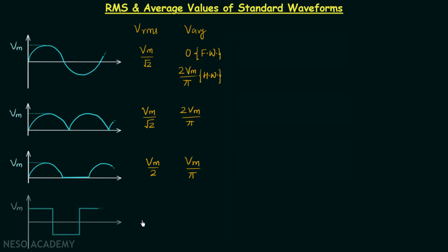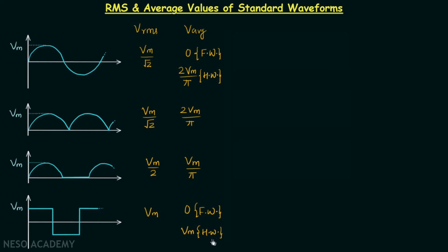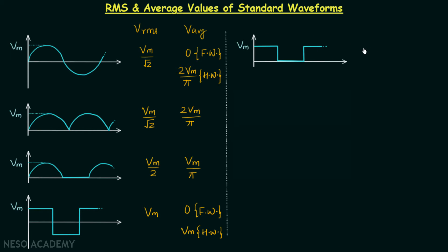The fourth signal waveform is the square wave. The RMS value is equal to Vm, the maximum value. The average value is equal to zero for the full wave, and equal to Vm for the half wave.